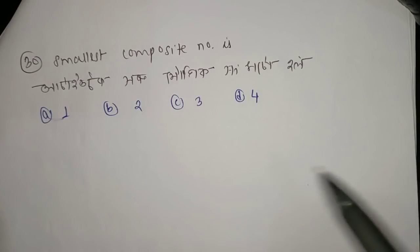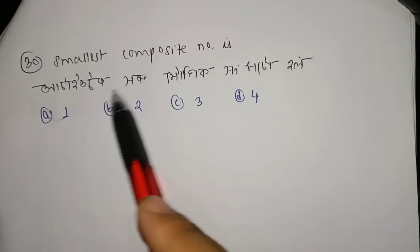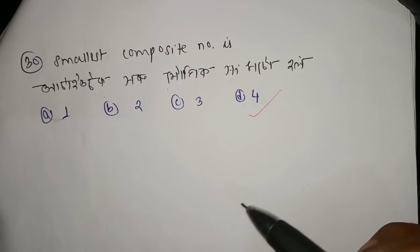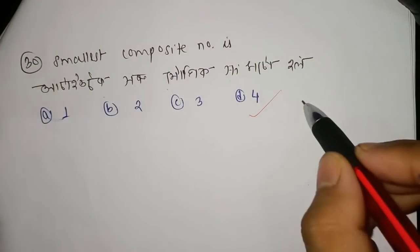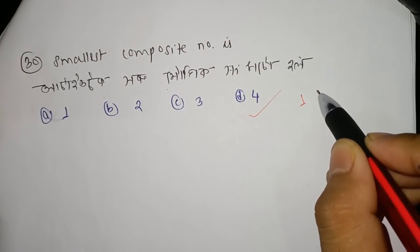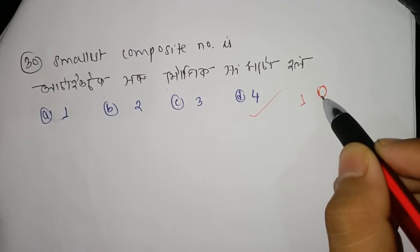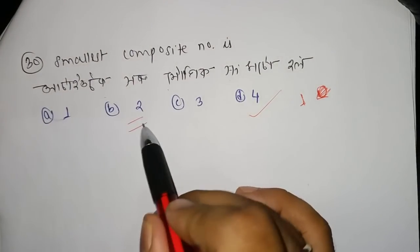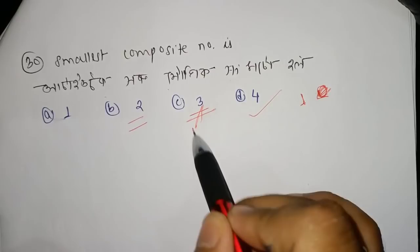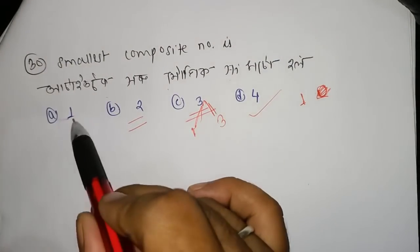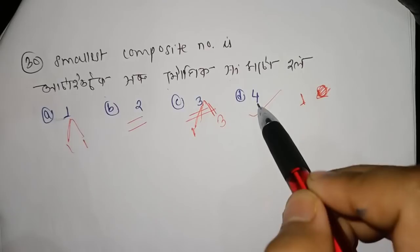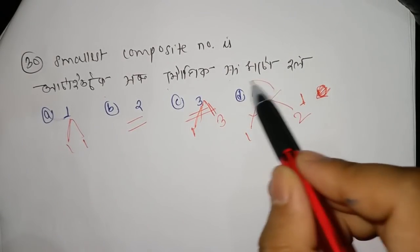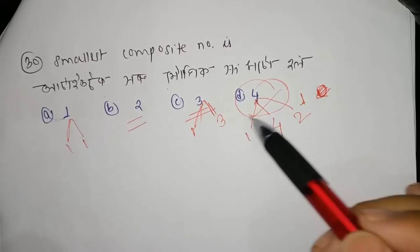The next question is: what is the smallest composite number? The answer is 4, since 4 is the smallest number that has more than two factors (1, 2, and 4). The smallest composite number is 4.